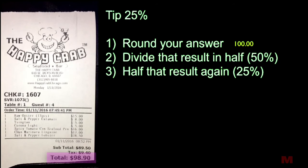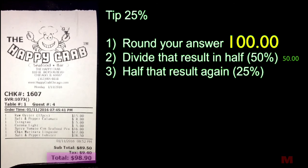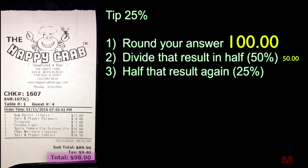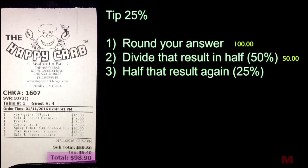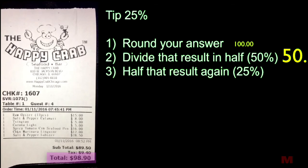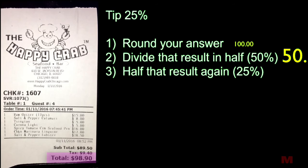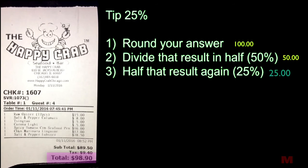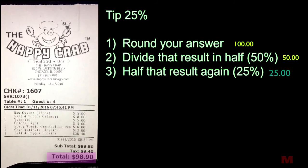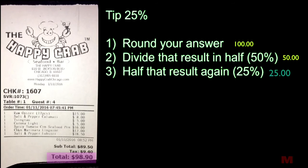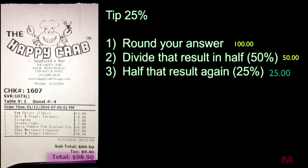Step two: divide that rounded answer in half. Half of $100 is $50 — what you just did there, dividing in half, is calculating 50%. Last step: half that result again. Halving 50% gives you 25%, so half of $50 is $25. That is how you calculate a 25% tip — round your bill, divide in half, then divide that result in half again.